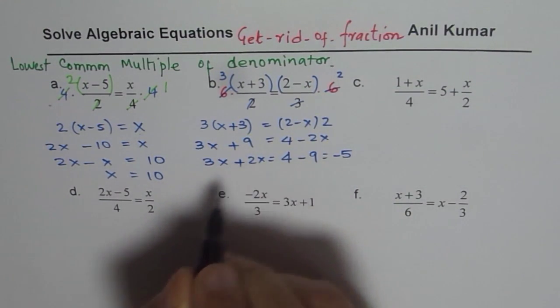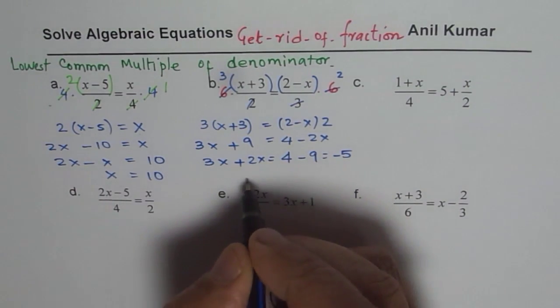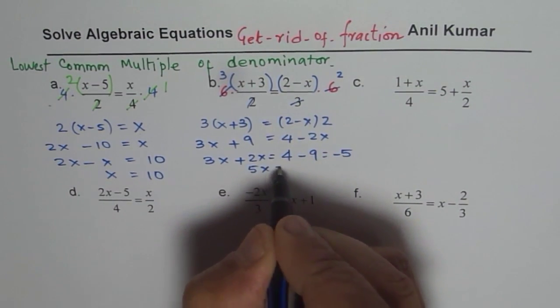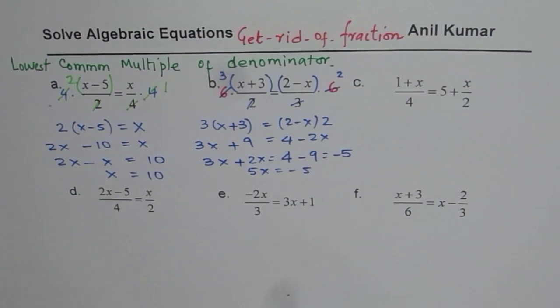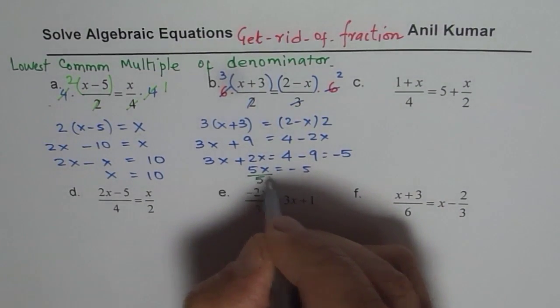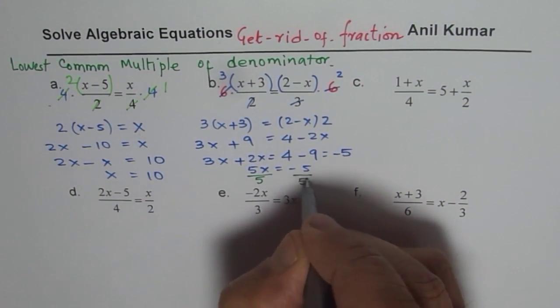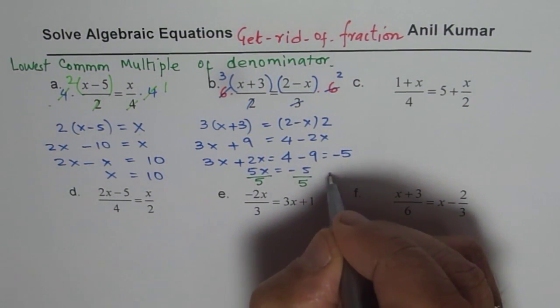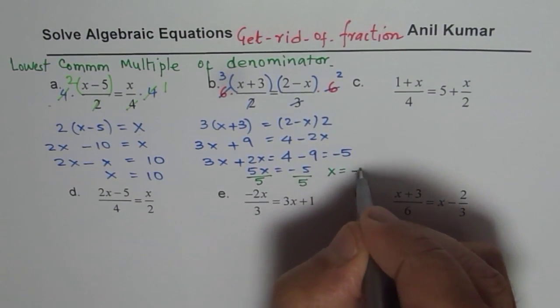So we could do 5x equals to minus 5. And at this stage, we can divide both sides by 5. So if I divide both sides by 5, since I am running out of space, I could write my answer as x equals to minus 1. You get the idea.